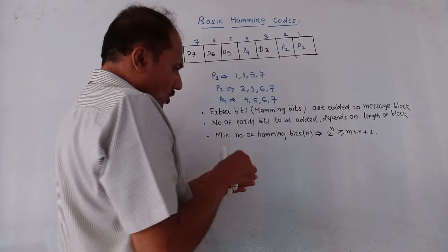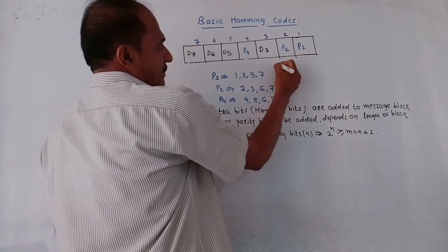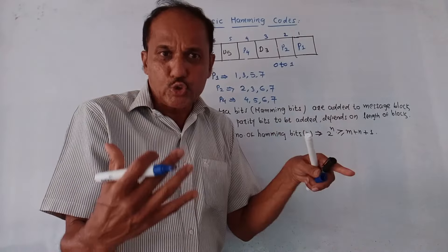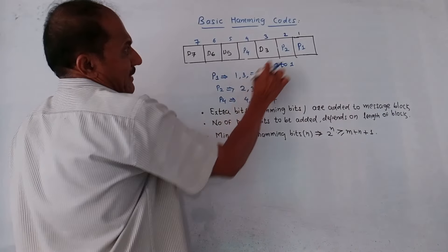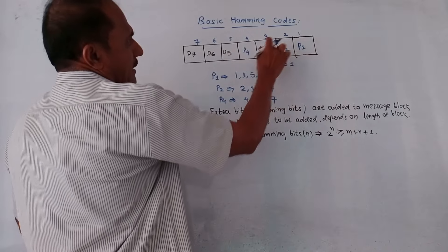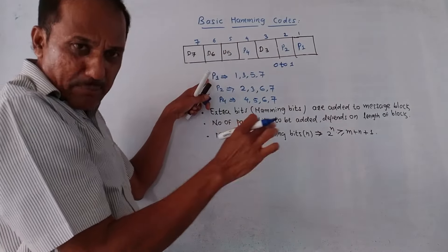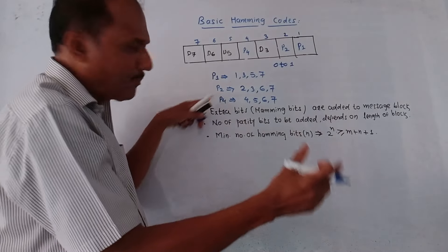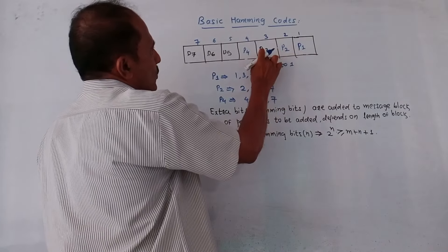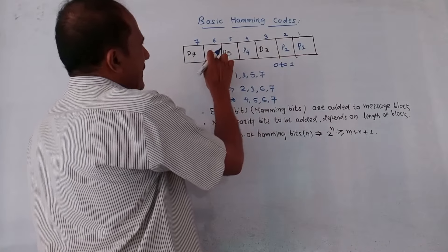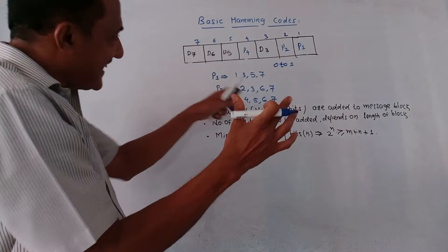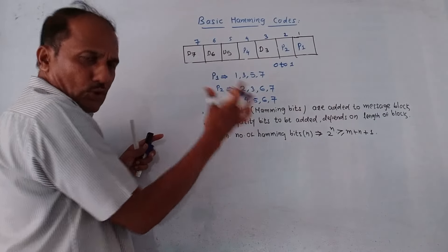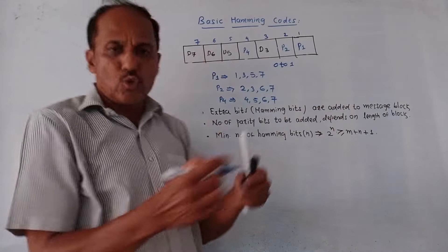The value of parity bit P1 can be adjusted to 0 or 1 to obtain even parity for bits at positions 1, 3, 5, 7 — that is, P1, D3, D5, and D6. Similarly, P2 is adjusted to 0 or 1 to obtain even parity for bits at positions 2, 3, 6, 7 — that is, P2, D3, D6, and D7. P4 is adjusted to 0 or 1 for bit combination at positions 4, 5, 6, 7 to obtain even parity.